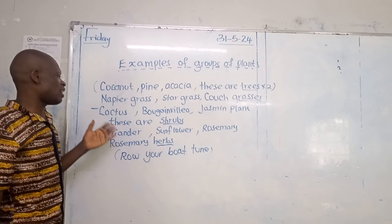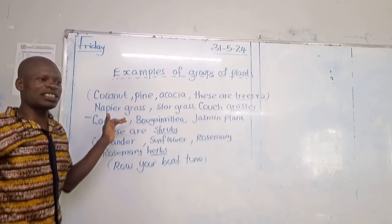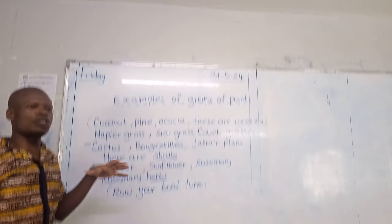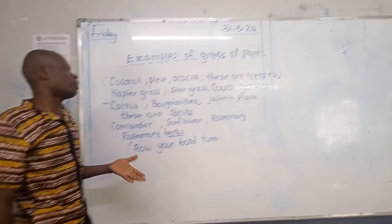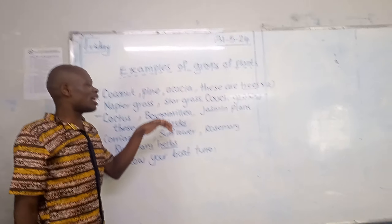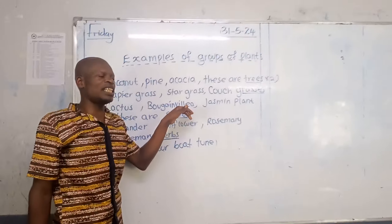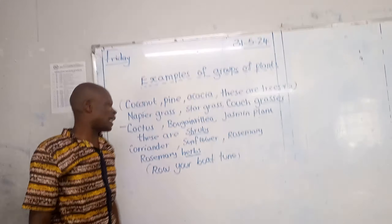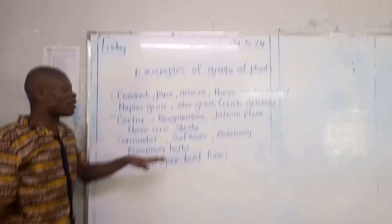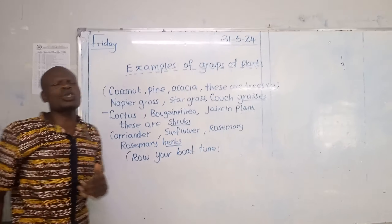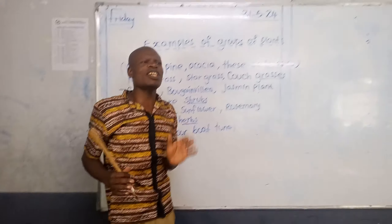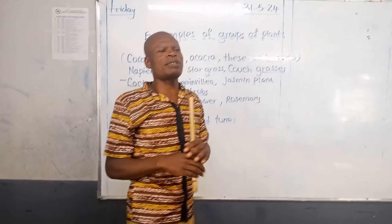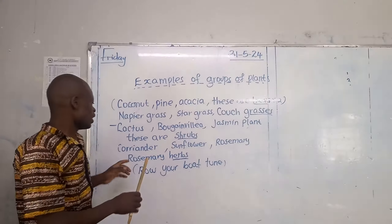Shrubs — we have cactus; they tend to be bushy. We have bougainvillea, jasmine. Shrubs tend to have medicinal properties or medicinal qualities.